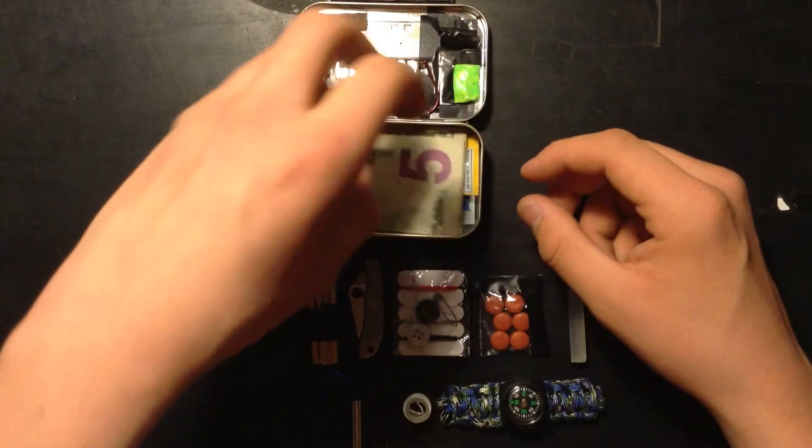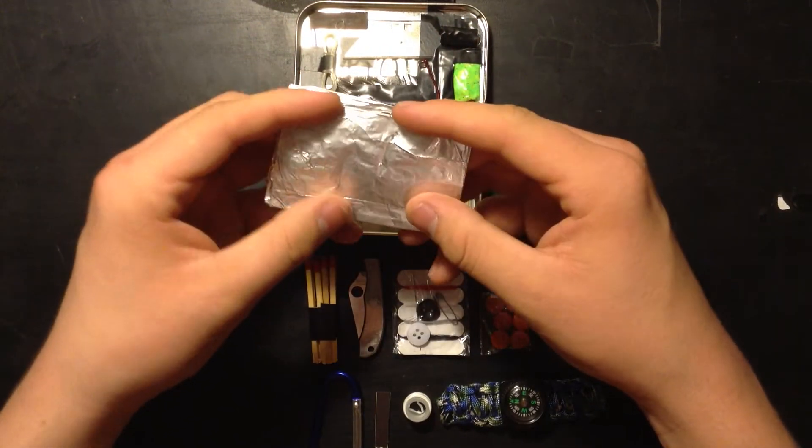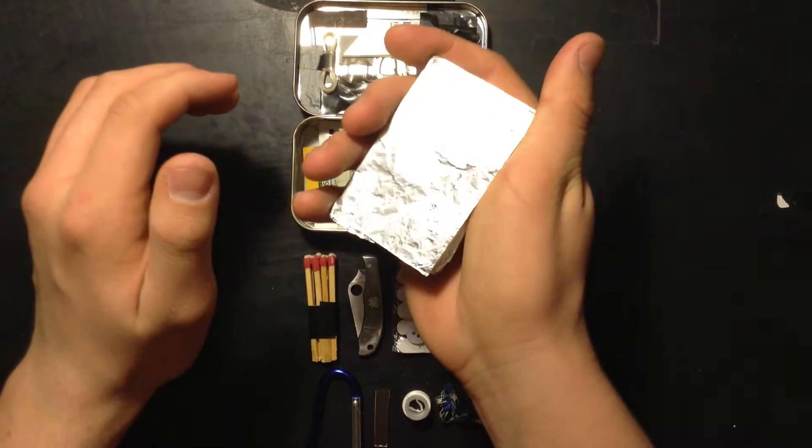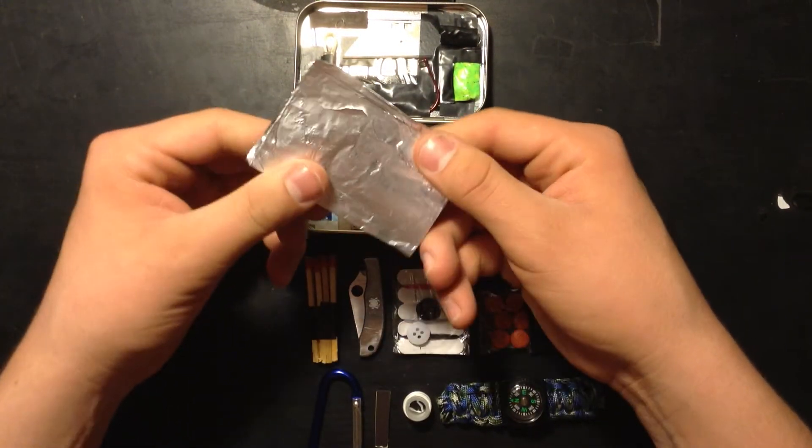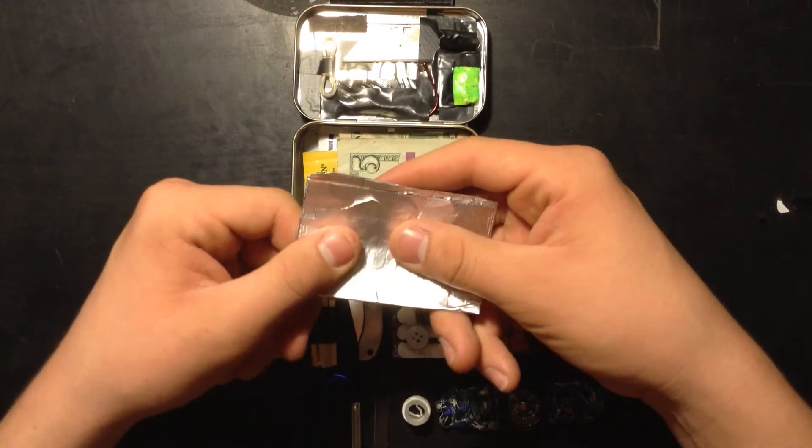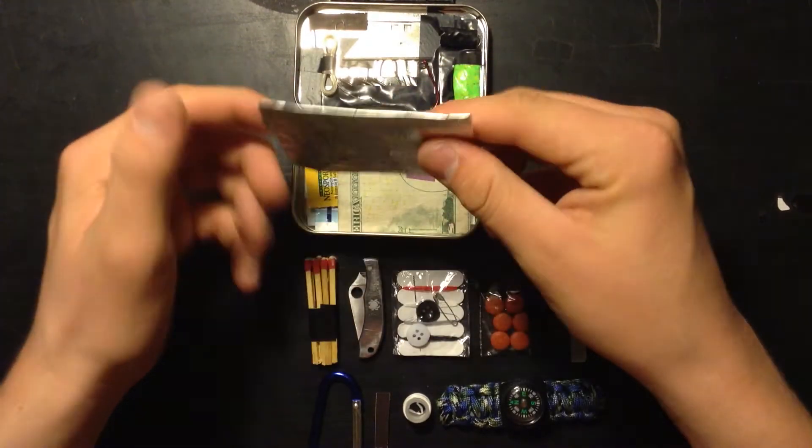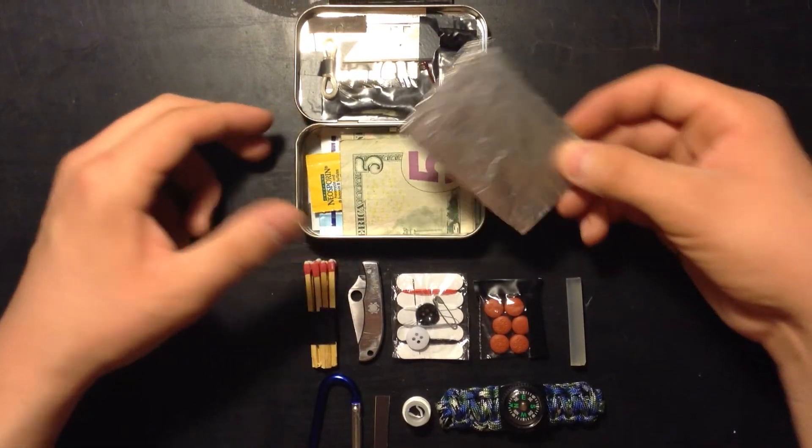Next, I got a piece of tinfoil. You can use this for a lot of things. You can use this for signaling, it's very bright. You can use it for cooking your food, storing food. You can use it as a bowl for water, stuff like that. This is very handy, so it's good to have one of those.